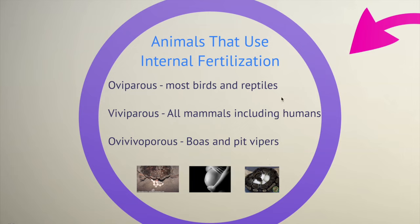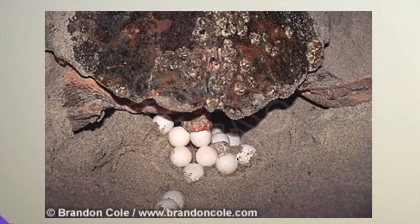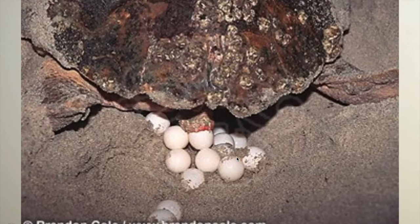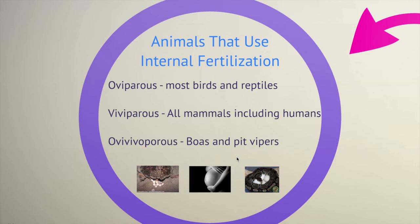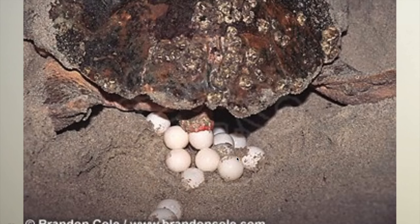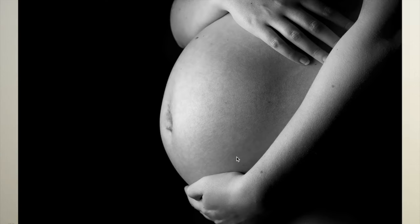Animals that use internal fertilization: oviparous organisms produce eggs — most birds and reptiles are examples. Viviparous organisms include all mammals, including humans, because the embryo develops inside the body. And ovoviviparous organisms include boas and pit vipers. Diagrams are shown of oviparous organisms laying eggs, viviparous organisms like human beings as an example, and ovoviviparous organisms such as snakes which produce eggs that hatch inside the body.